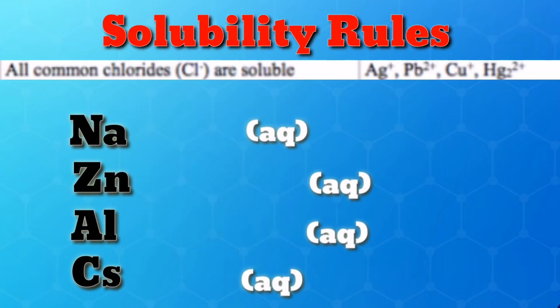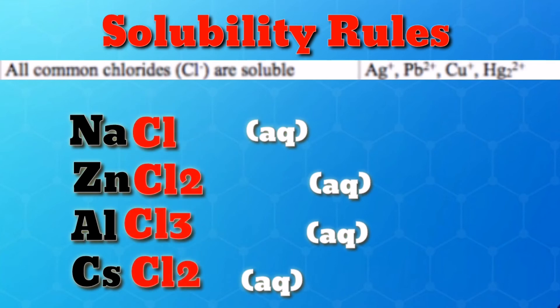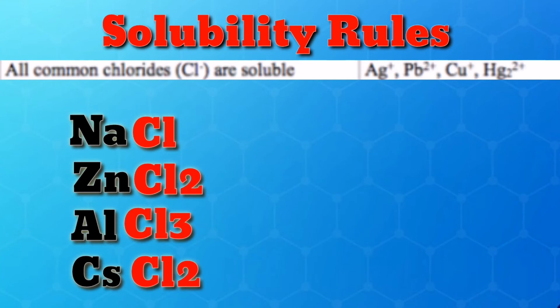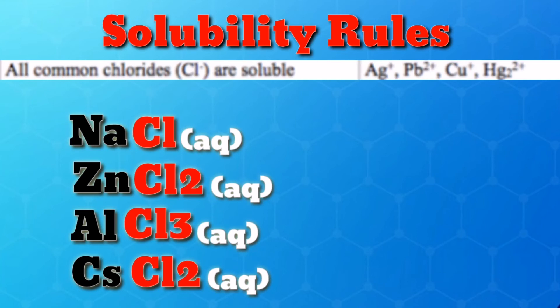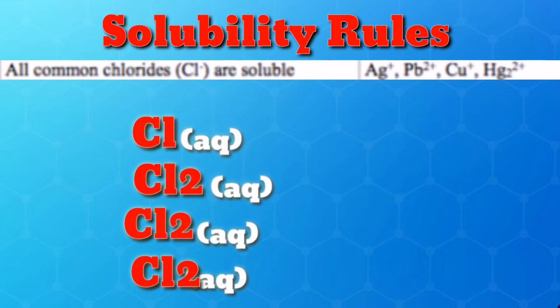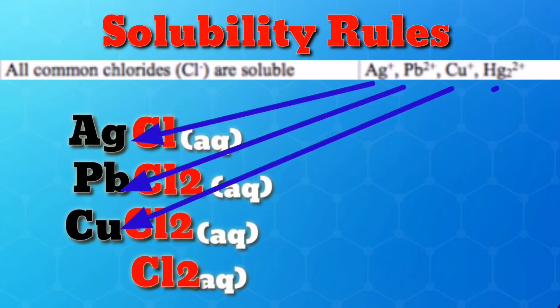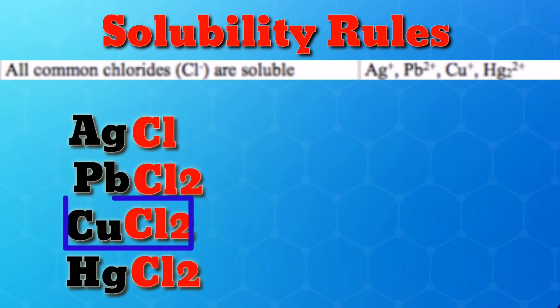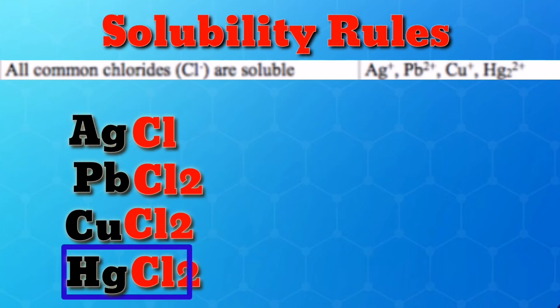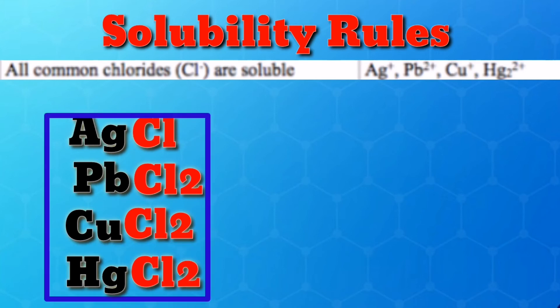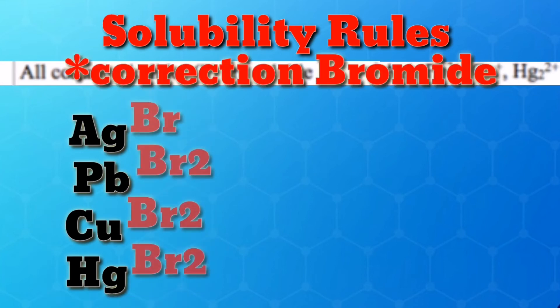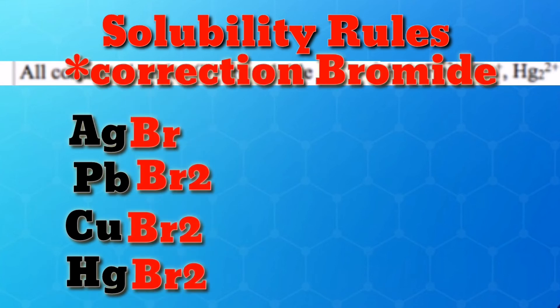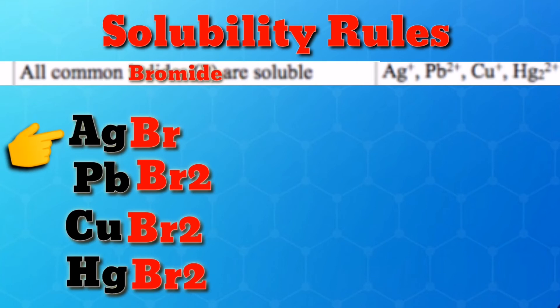Rule 5: All common chlorides are soluble. Examples: sodium chloride, zinc chloride, aluminum chloride, and cesium chloride — all are soluble. However, exceptions include chloride compounds with silver, lead, copper, and mercury. Silver chloride, lead chloride, copper chloride, and mercury chloride are insoluble.